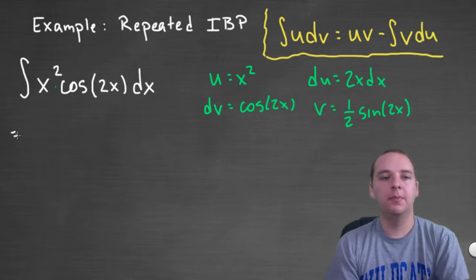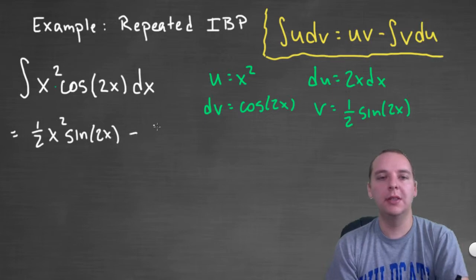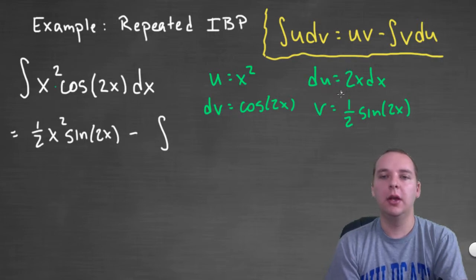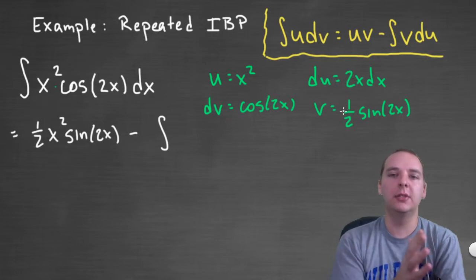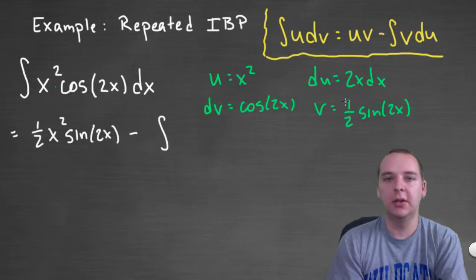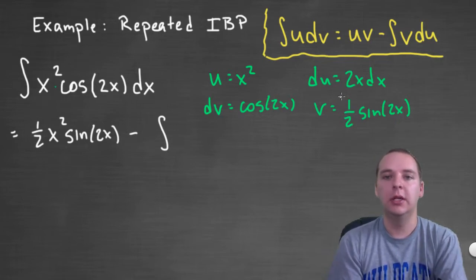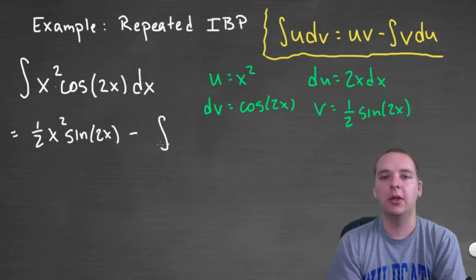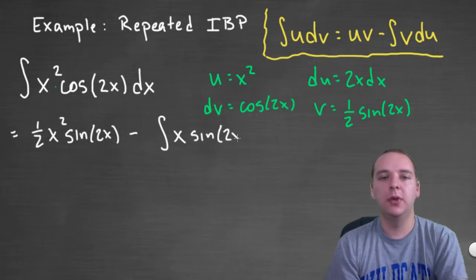We get u times v, so one half x squared sine 2x minus the integral of v du. Now one thing I notice here is that I have some constants like a two and a one half. I think I'll pull those guys outside the integral, and actually this is coincidental, I didn't plan on this, but the two and the one half cancel each other, so there's actually not anything even to write out here. But on the inside we would have an x sine of 2x dx, so we would have integral of v du for this last part here.